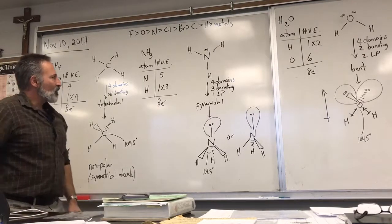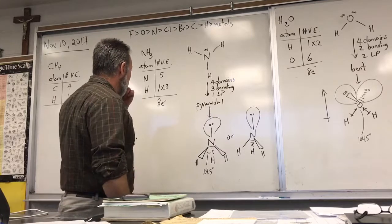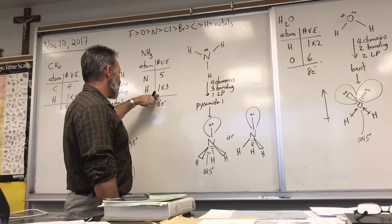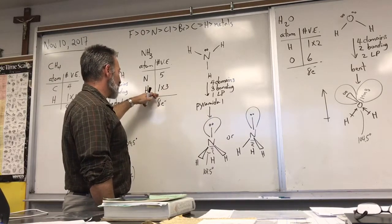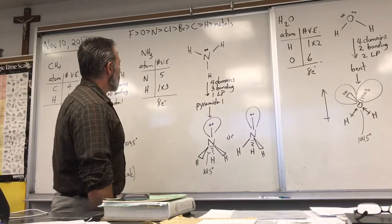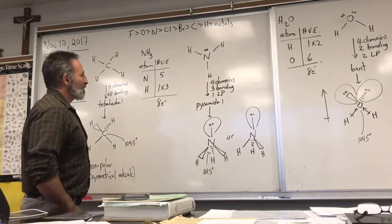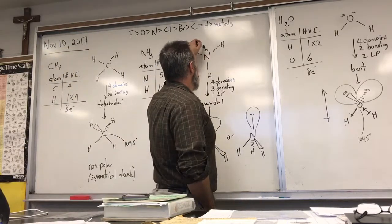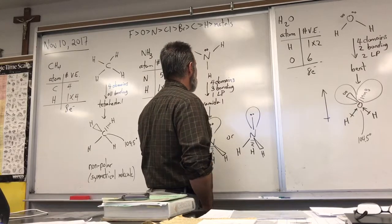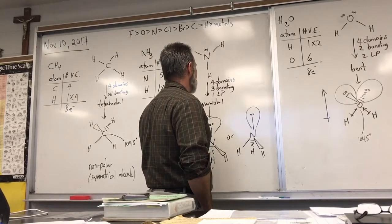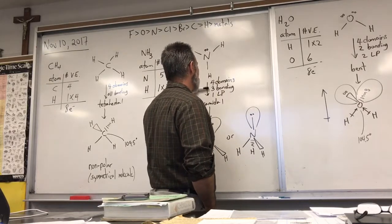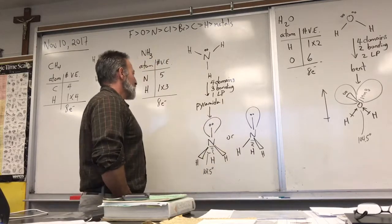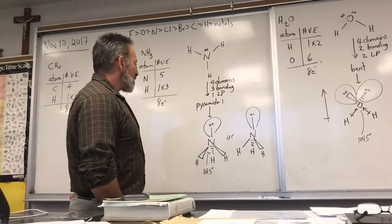Now we look at ammonia. Ammonia also has eight electrons because nitrogen carries five valence electrons and each hydrogen has one — a total of eight electrons to be accounted for. Three of them are in bonding, and the last pair is on the central atom, giving us four domains, three bonding and one lone pair, which suggests a pyramidal geometry.